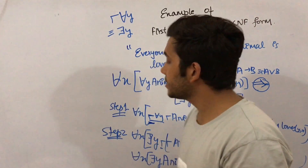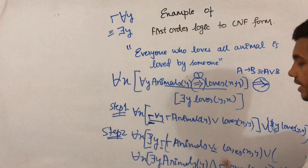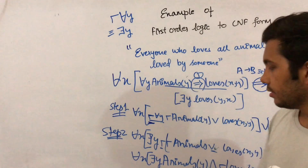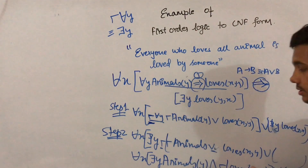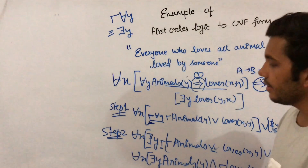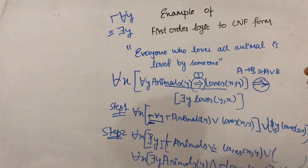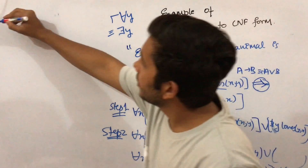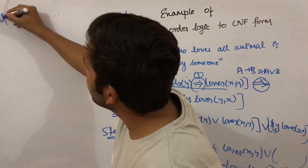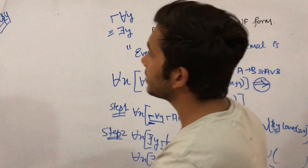In step three, we rename the variables. You can rename the variables or write them as they are. Now we go to step four, which is the main step — Skolemization.